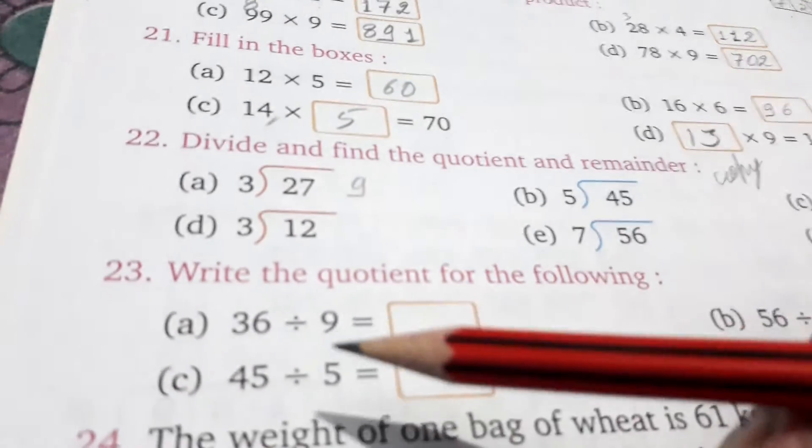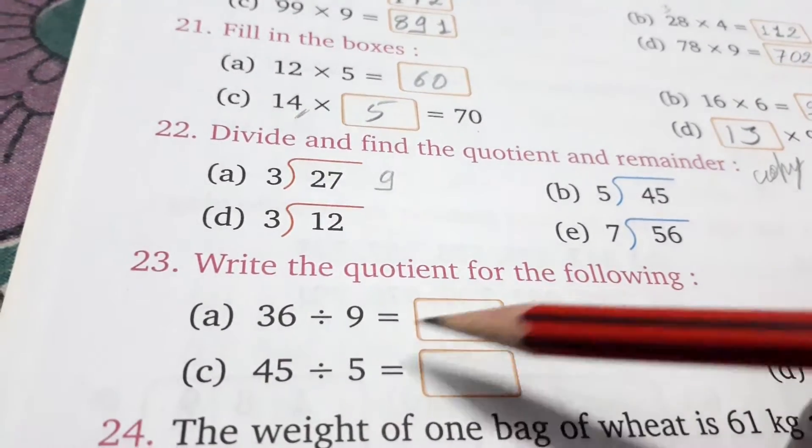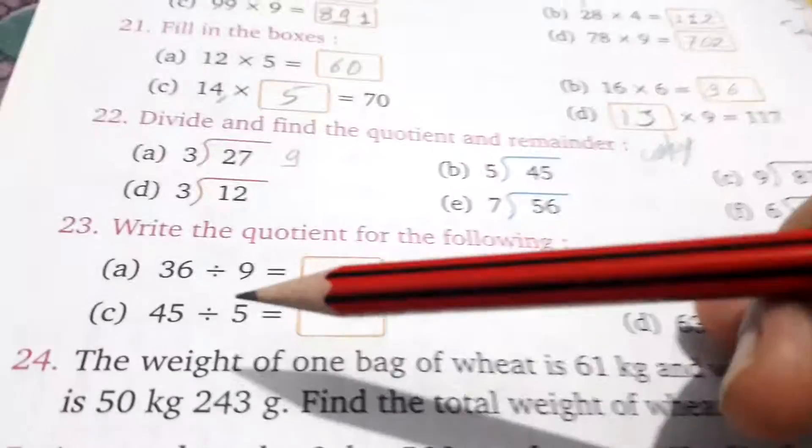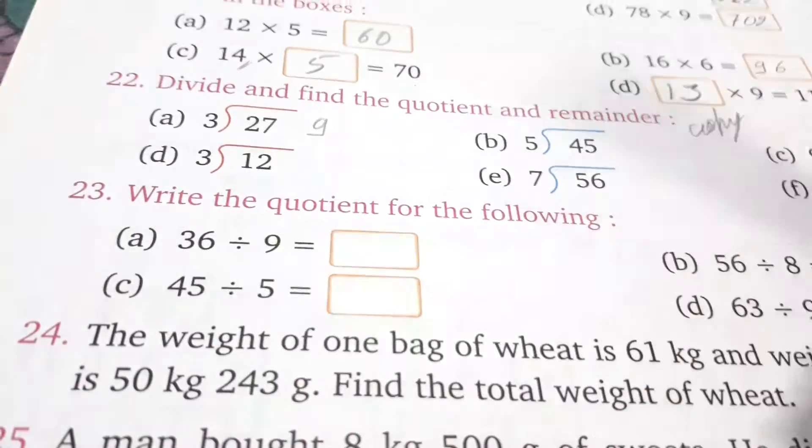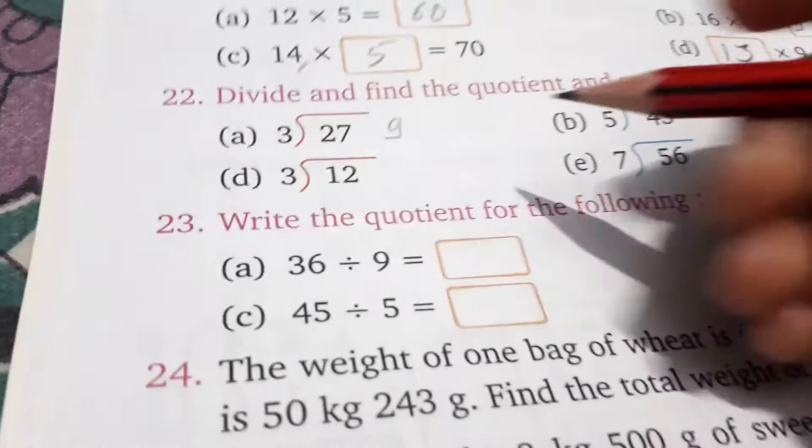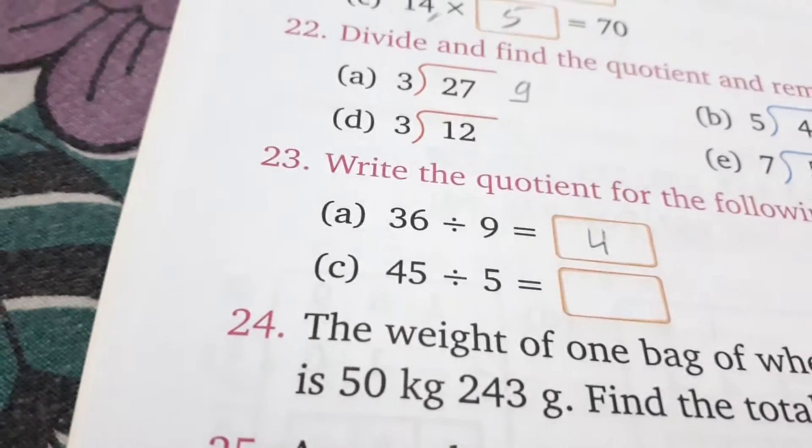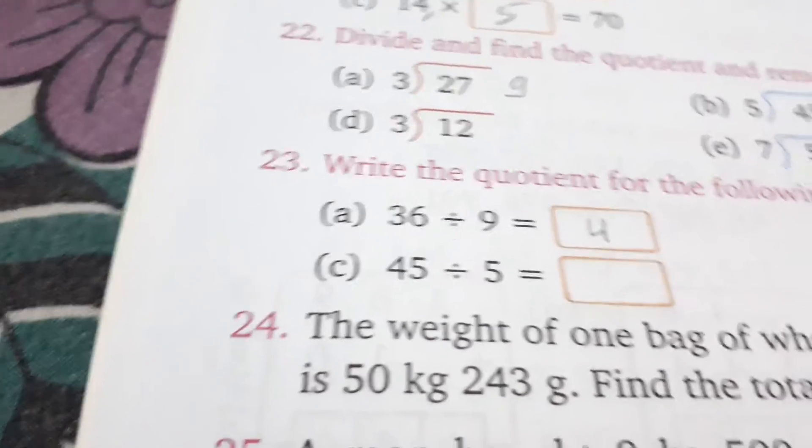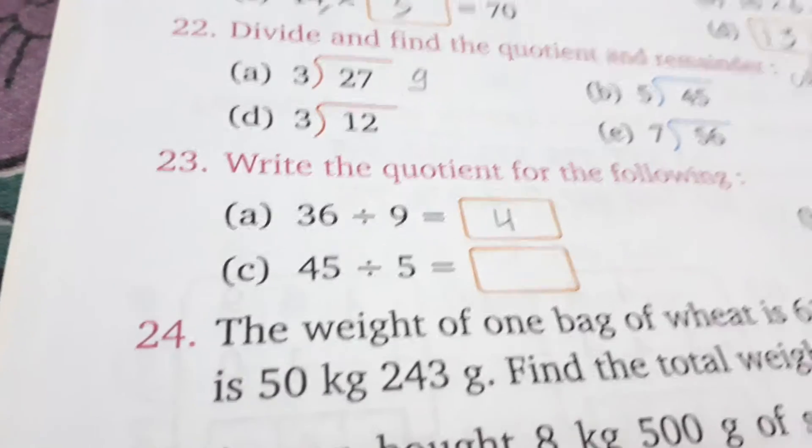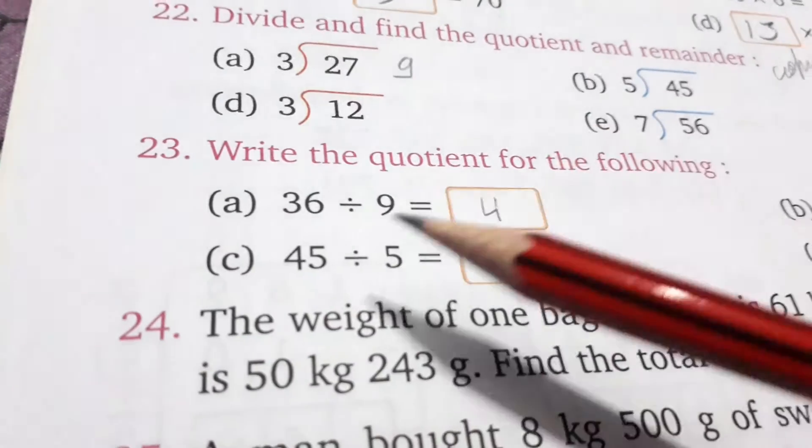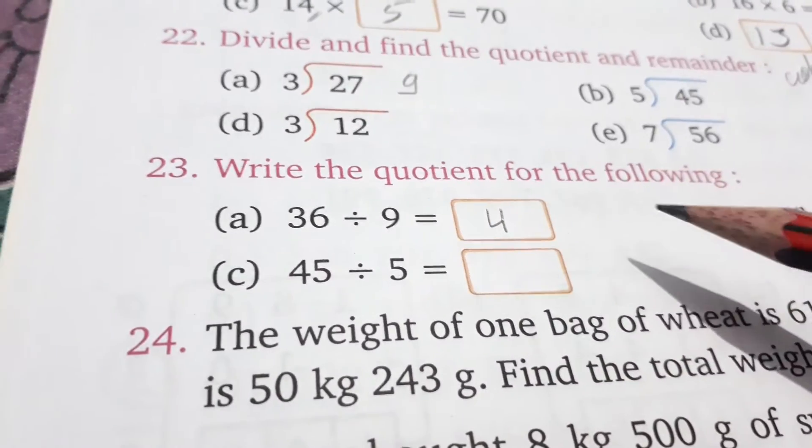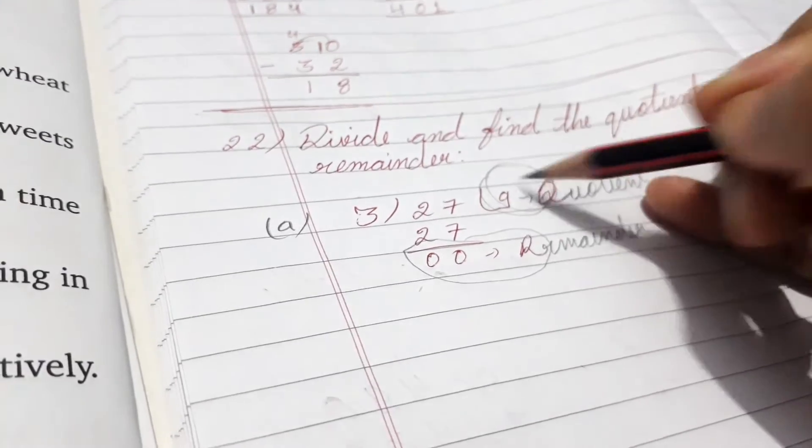Okay? Now, 23. This is the same as a divide. This is the same divide. You will also have to write it as it is. So, you have to note the question here. The question is, write the quotient for the following. So, quotient means which is quotient. Not a remain.